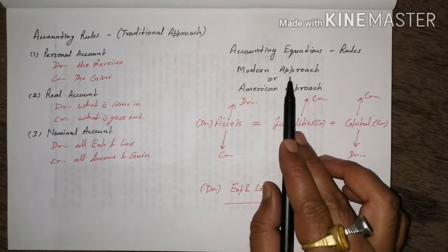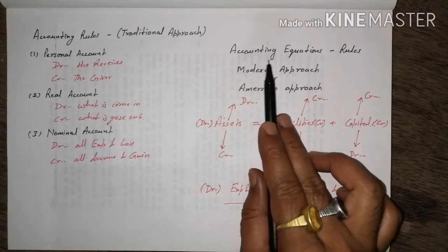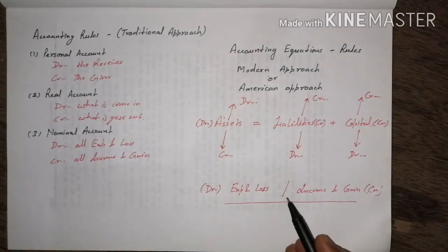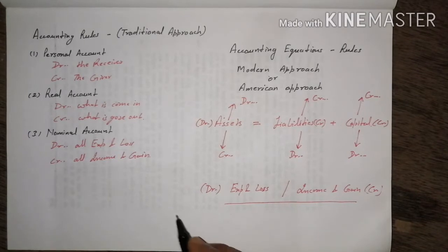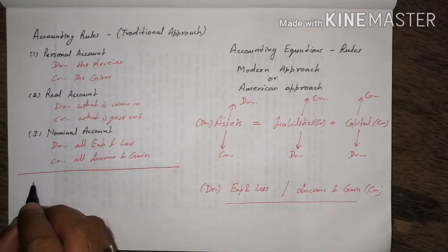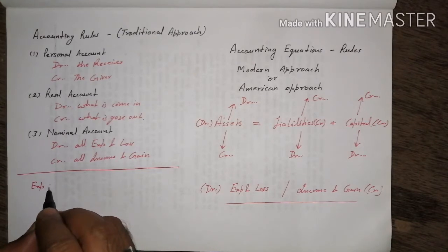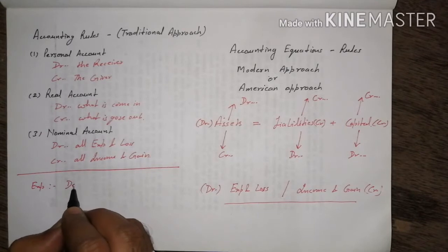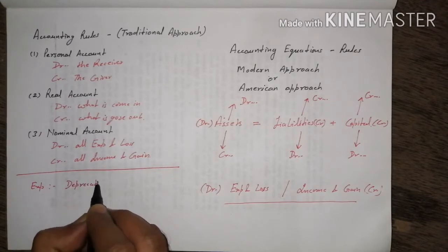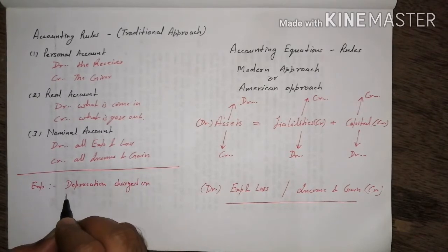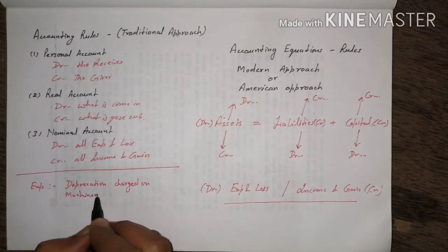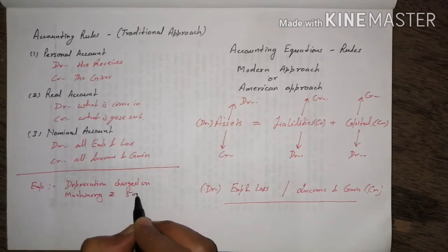This American approach depends on the accounting equation. The questions we will now face will involve advanced journal entries. Let us take an example: depreciation charged on machinery, rupees 5,000.